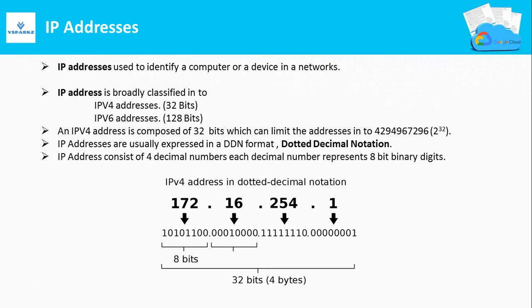First is IP, or IP addresses. IP stands for Internet Protocol. An IP address is a numerical label assigned to each device connected to a computer network.